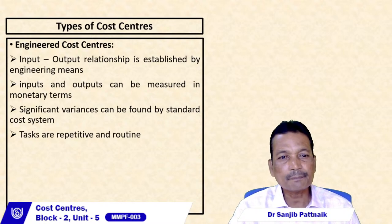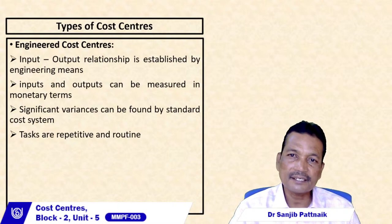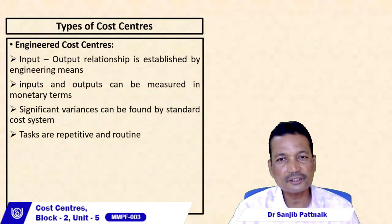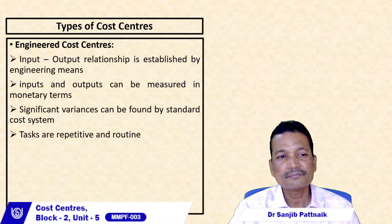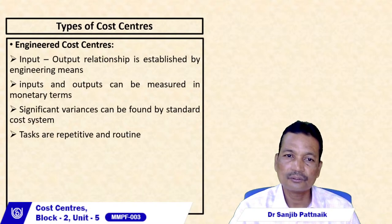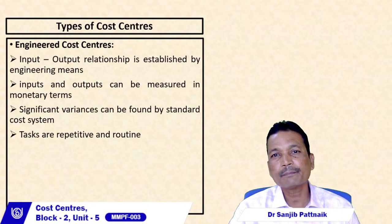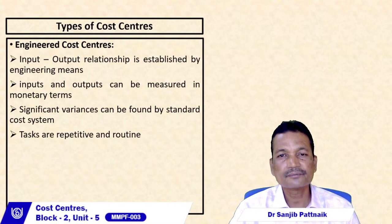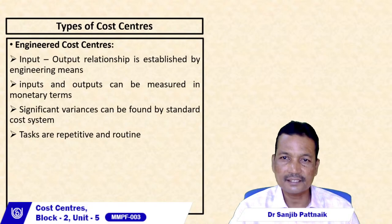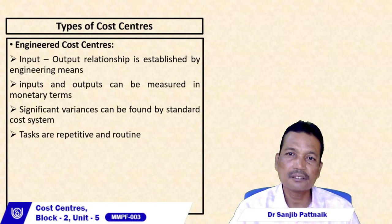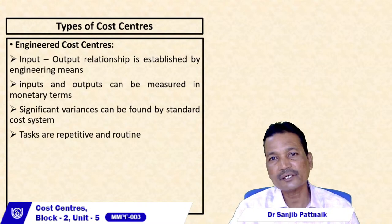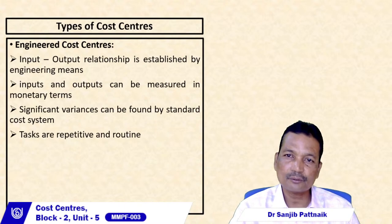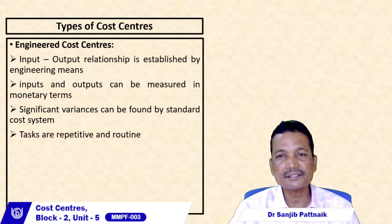In engineered cost centers, inputs and outputs can be measured in monetary terms. Since inputs and outputs may be in different units, converting them to a common monetary denomination makes comparisons much easier. Once both are expressed in monetary terms, establishing and analyzing the relationship becomes straightforward.